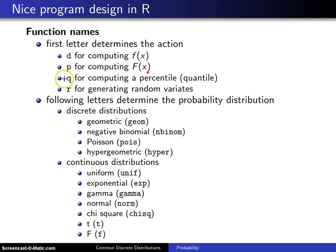If the first letter is Q, you're computing what's known as a quantile, also known as a percentile. If the first letter is R, then you are generating random variants.